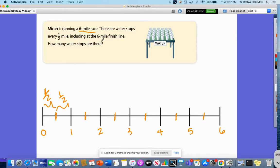So in this case, it says how many water stops are there? So in this case, I'm going to get a whole number. So I know that I'm going to take my six miles and I am dividing it by one half. I want to know how many sets of one half there are in six miles.